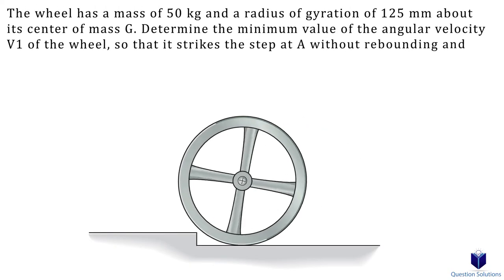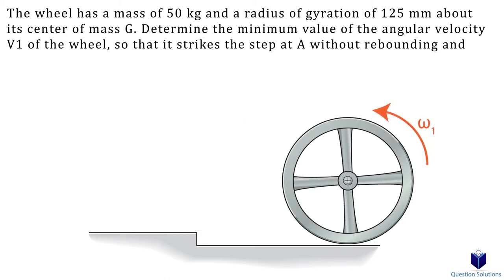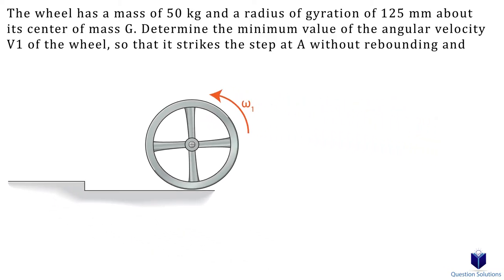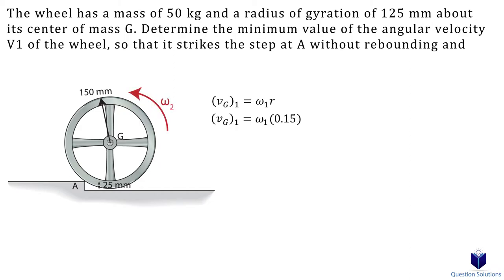Let's take a look at this problem, where we have a wheel and we have to figure out the minimum angular velocity required for the wheel to make it over the step. The wheel is rolling without slipping, so right before the wheel strikes the step, the velocity vector is straight ahead. We can find this velocity by multiplying the angular velocity by the radius. When the wheel is on the edge and about to go up, the velocity vector points at an angle, and that velocity is also angular velocity times the radius. Note that the two angular velocities are different. Let's also calculate the mass moment of inertia using the radius of gyration. The mass is 50 kg and the radius of gyration is 0.125 m.